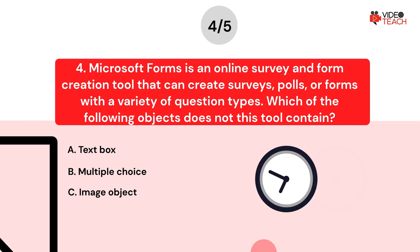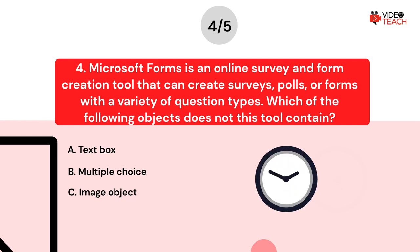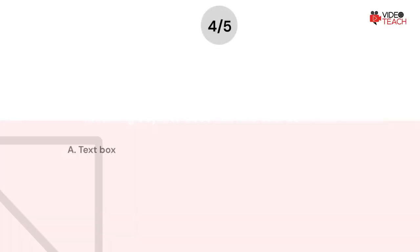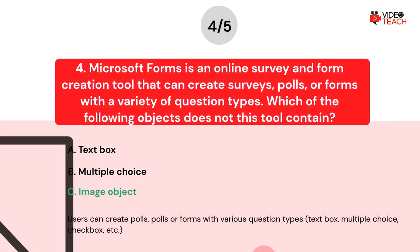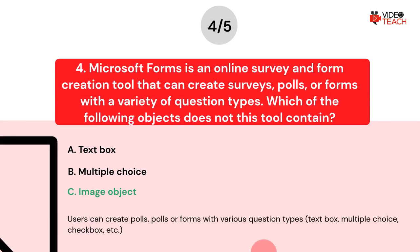Now you have about 15 seconds to think about your answer. The correct answer is C. Users can create polls or forms with various question types: text box, multiple choice, check box, and others.